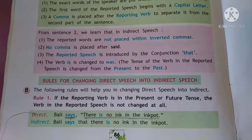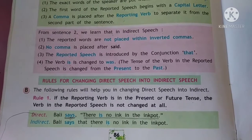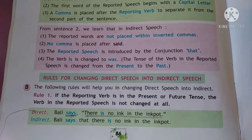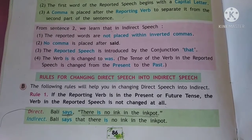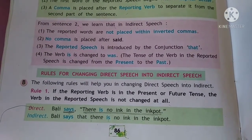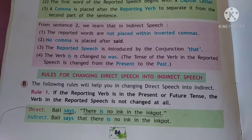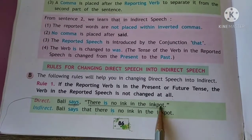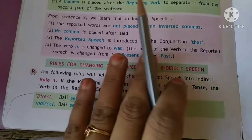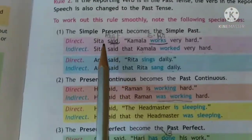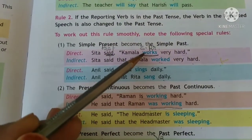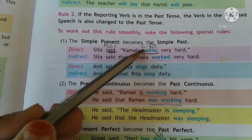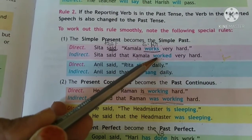We had learnt about the rules that we follow for changing from direct into indirect speech. The first rule: if the reporting verb is in the present or the future, we do not make any change in the reported speech. The second rule: when the reported verb is in the past, the verbs in the reported speech that are in the simple present change into the simple past.